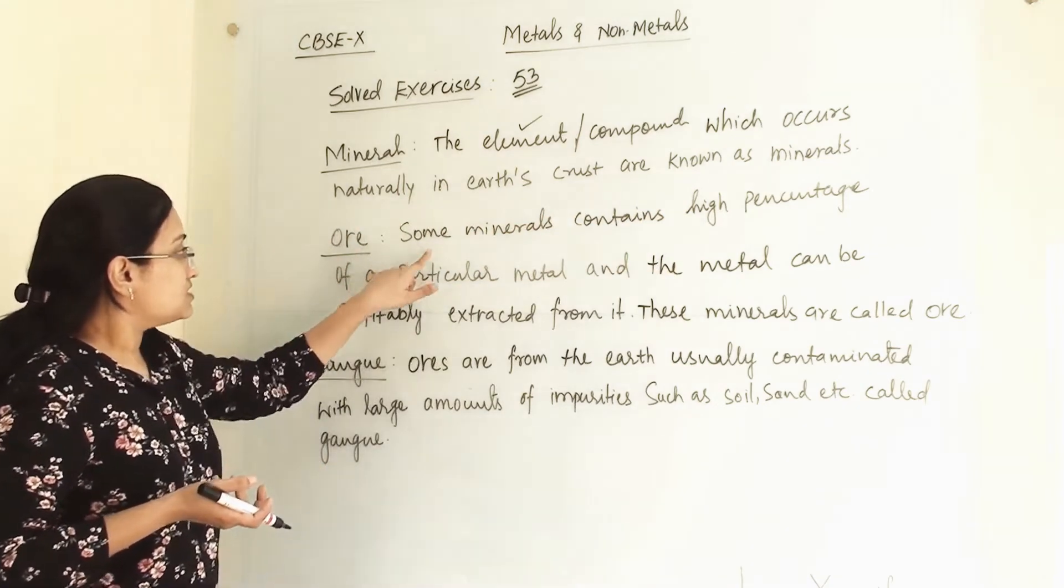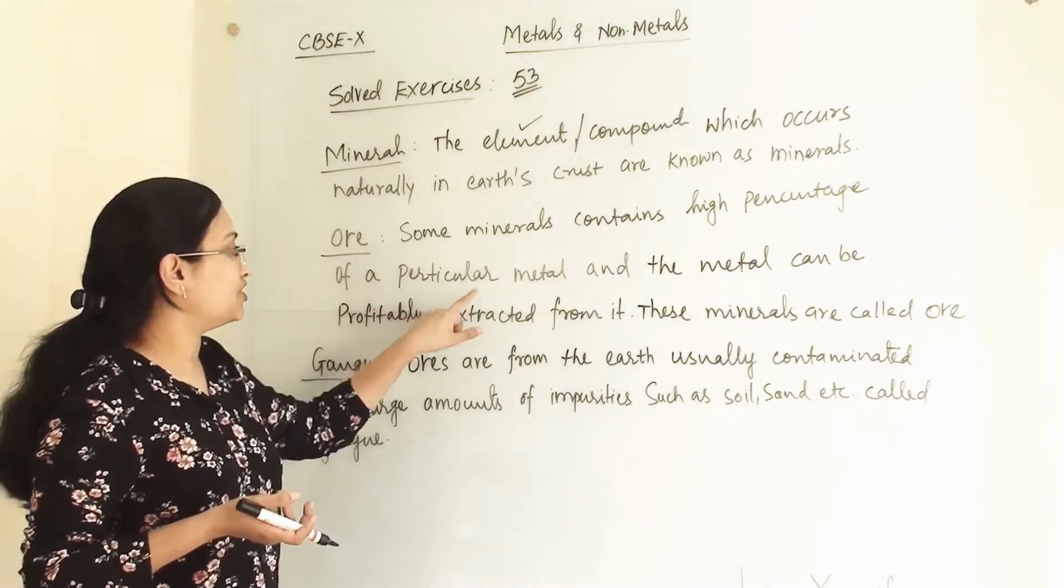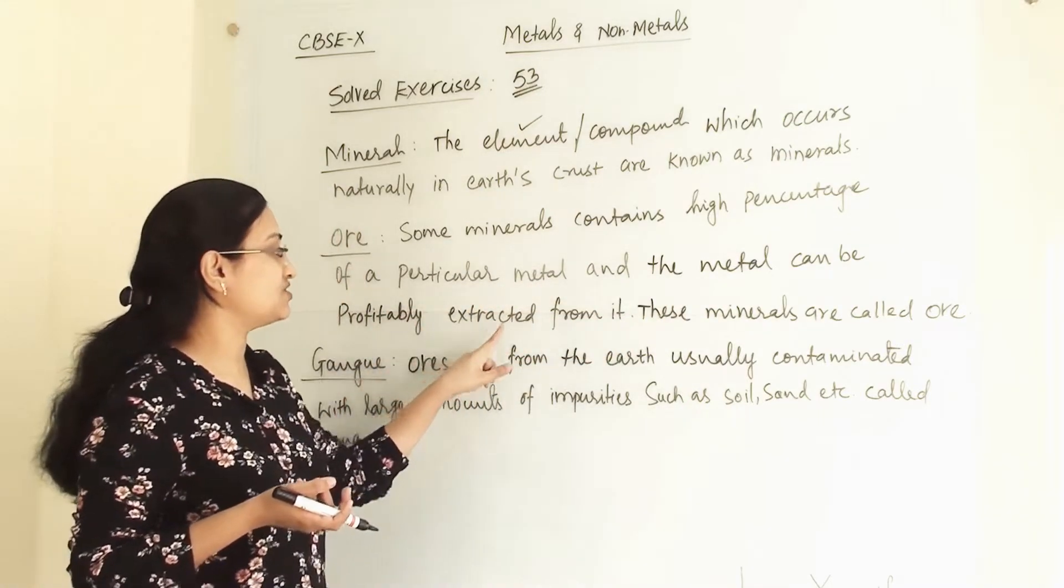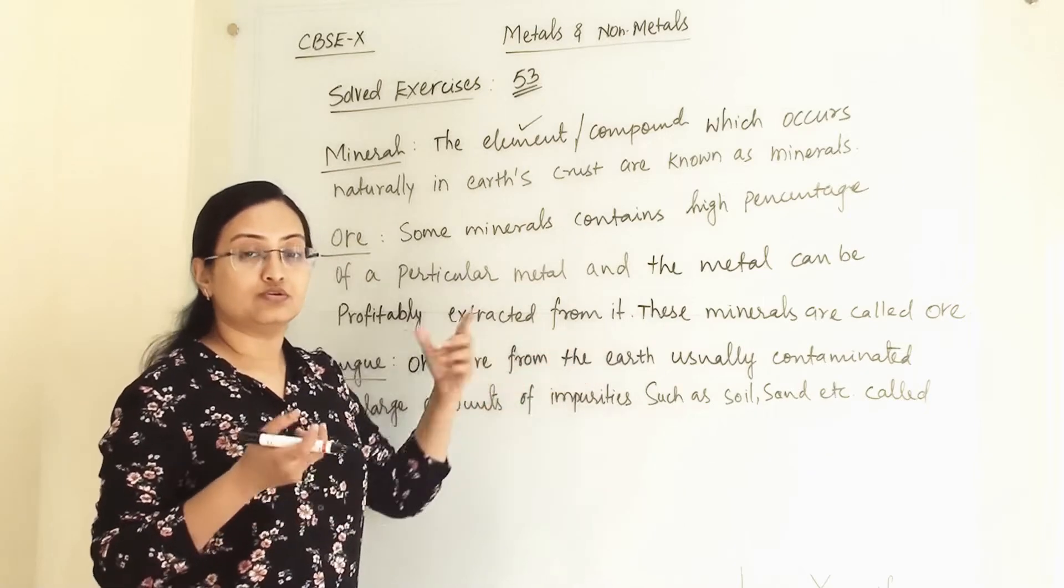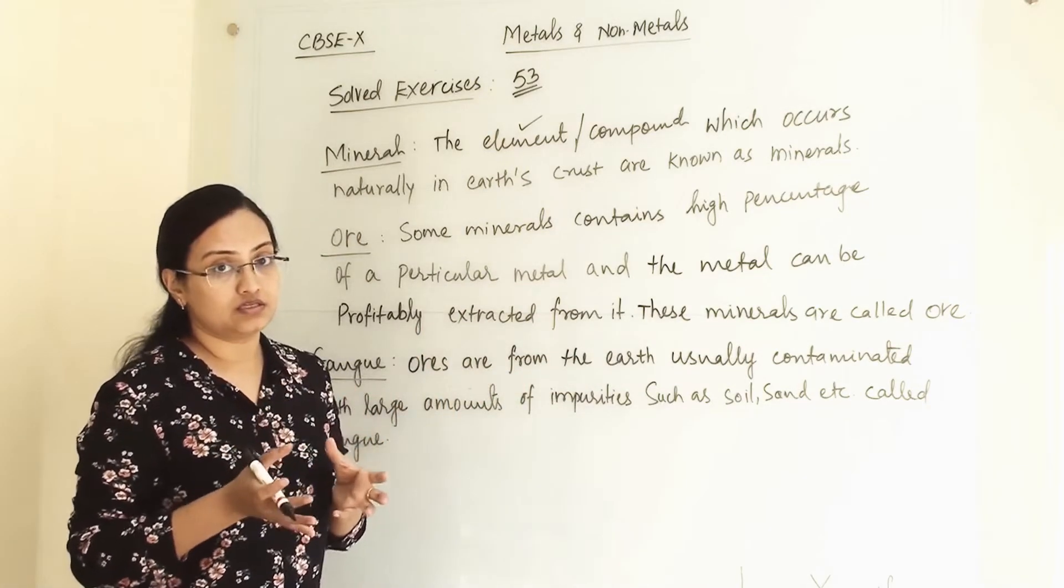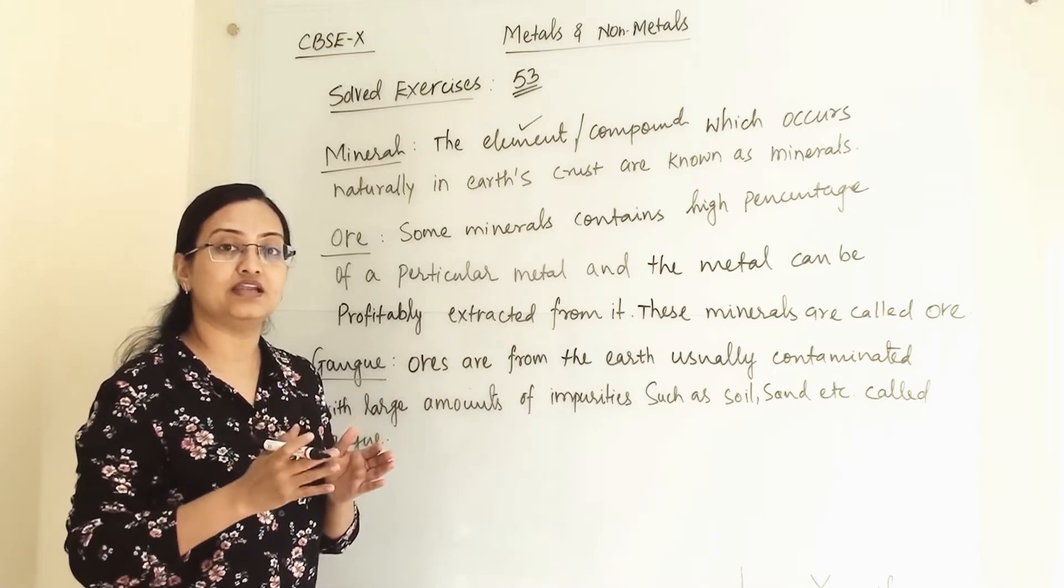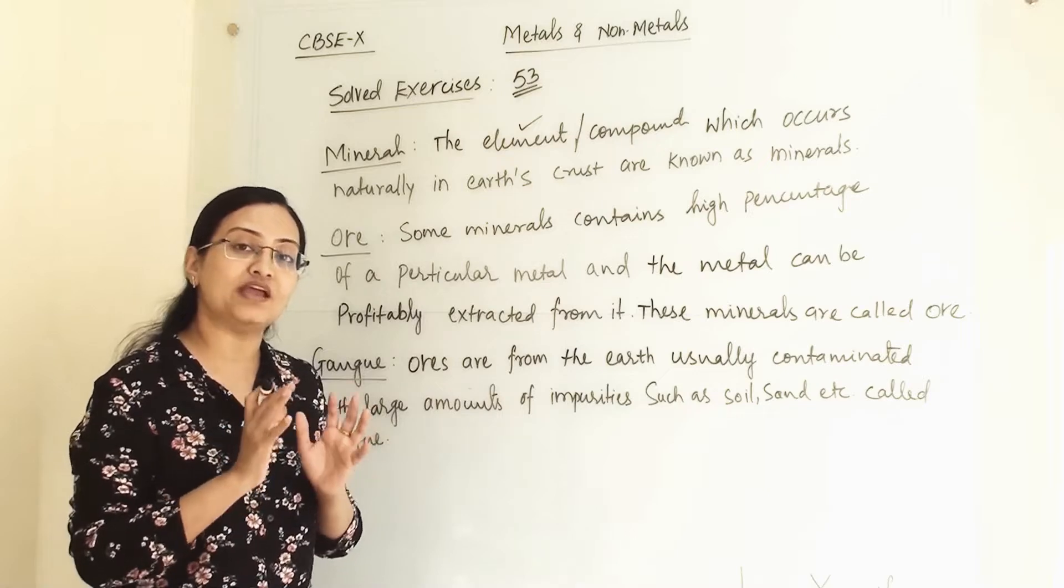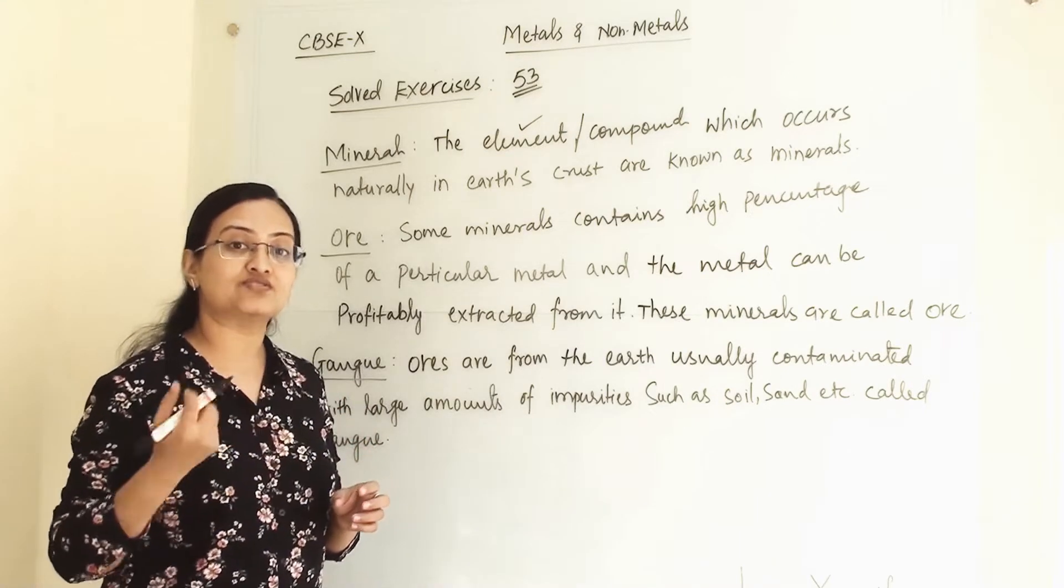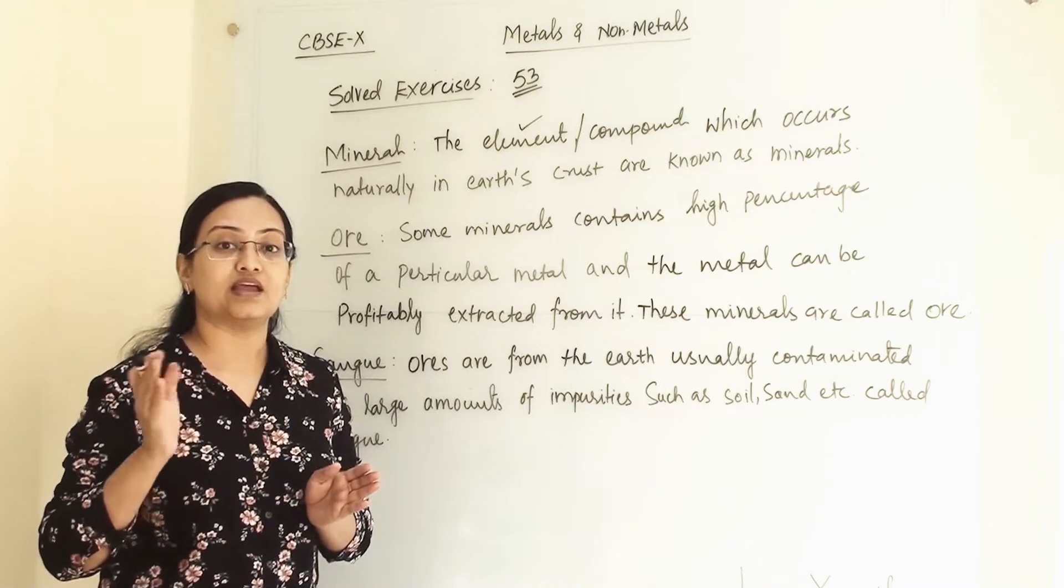Ore: Some minerals contain high percentage of a particular metal and the metal can be profitably extracted from it. There will be so many minerals in the earth's crust, but at some geographical area some minerals are containing very high percentage of any particular metal, which when we are extracting, it is profitable to us by extracting it.